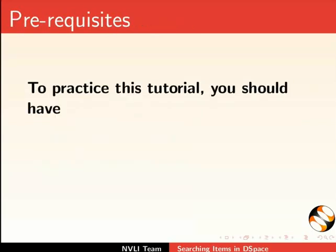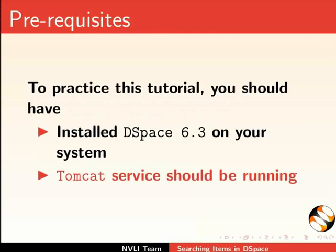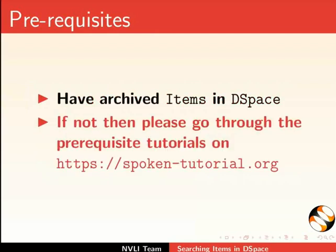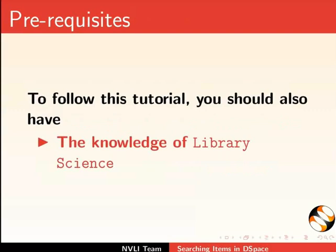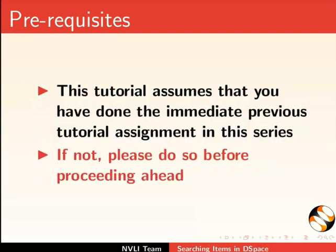To practice this tutorial you should have installed DSpace 6.3 on your system, Tomcat service should be running, and have archived items in DSpace. If not, please go through the prerequisite tutorials on this website. To follow this tutorial you should have knowledge of library science. This tutorial assumes that you have done the immediate previous tutorial assignment in this series. If not, please do so before proceeding ahead.